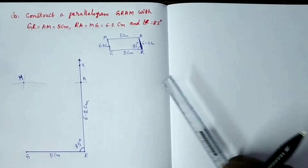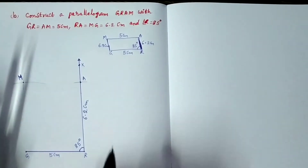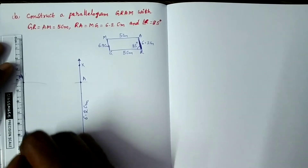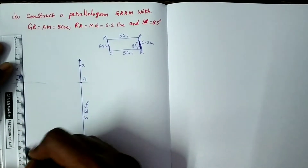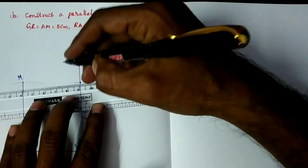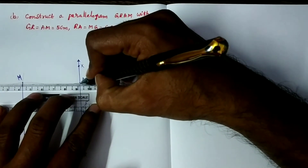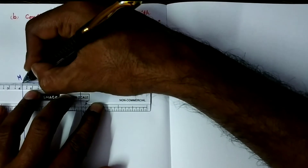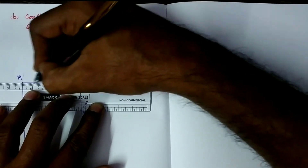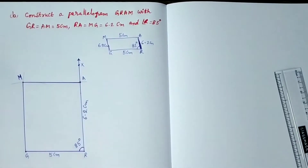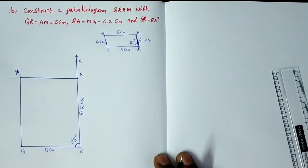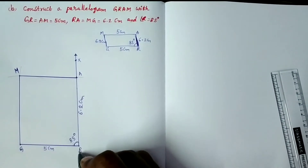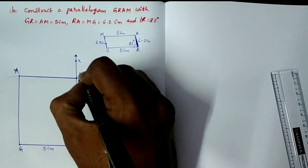Now join GM and AM. So this is a parallelogram GRAM. So this is the required parallelogram. GRAM is constructed.